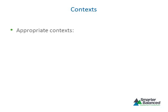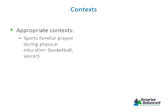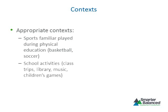Contexts of items must be appropriate for the age and experiences of high school students. An appropriate context for high school students could include sports played during physical education, school contexts that are universal to all students, and school activities such as class trips, going to the library, music class, and playing games in physical education class, as all of these are universal activities.